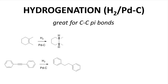Let's discuss hydrogenation reactions. In intro organic classes, hydrogenations normally involve hydrogen — H2 gas — and a palladium catalyst on carbon, Pd/C. This reagent combination is excellent for adding hydrogen across a carbon–carbon pi bond, whether it is an alkene or an alkyne. Both functional groups are reduced all the way down to an alkane.